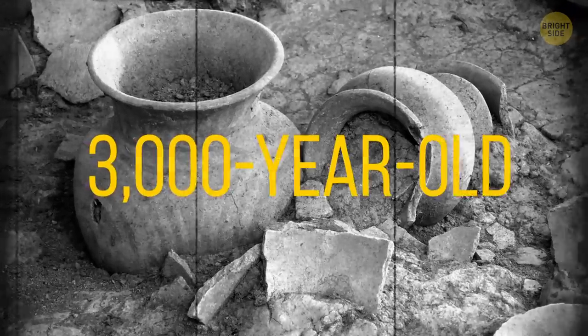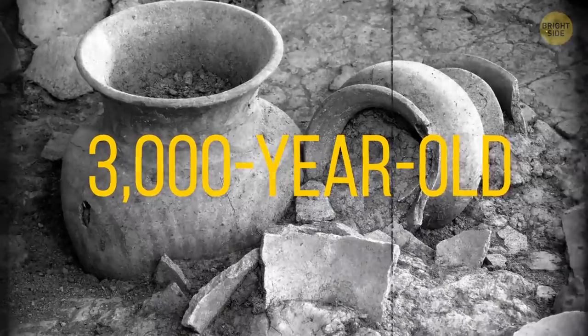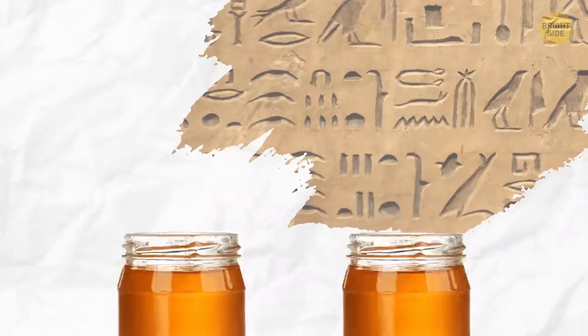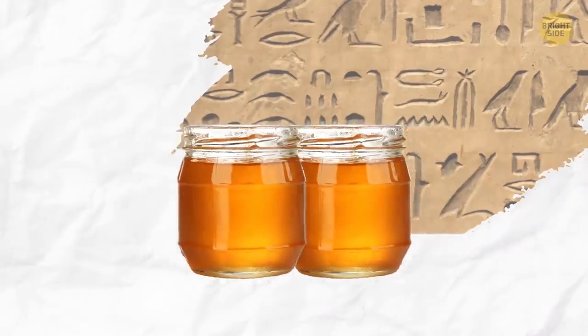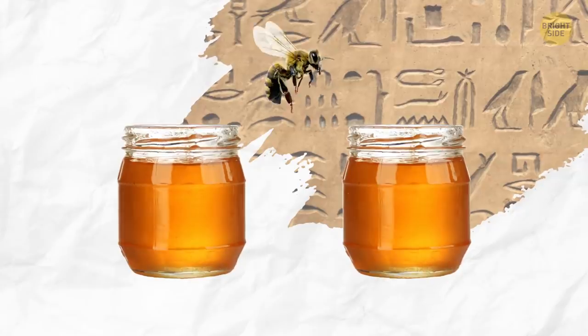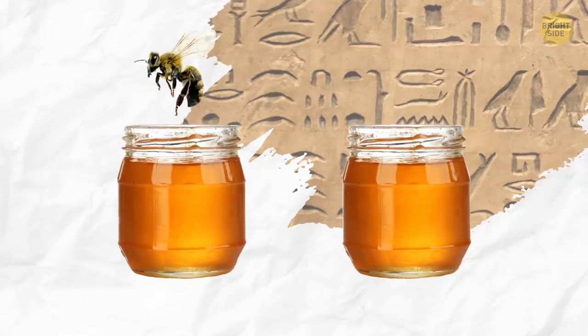Archaeologists found 3,000-year-old pots of honey in an ancient Egyptian tomb. This is the oldest sample in the world, and it's still perfectly edible. Apparently, honey just doesn't go bad.